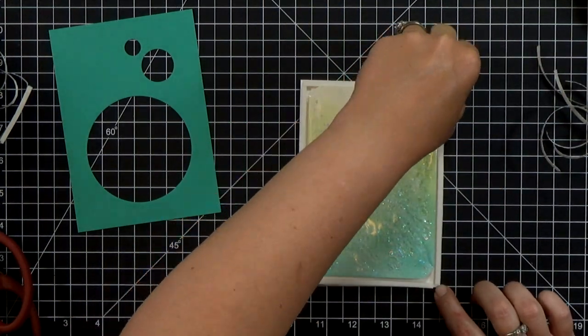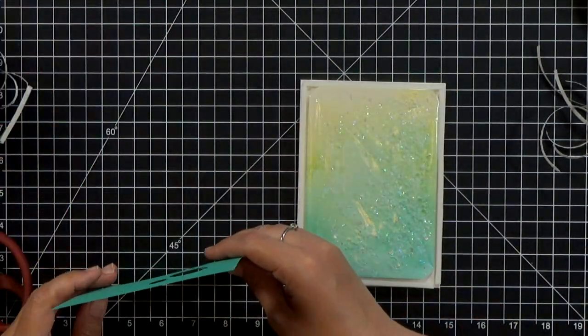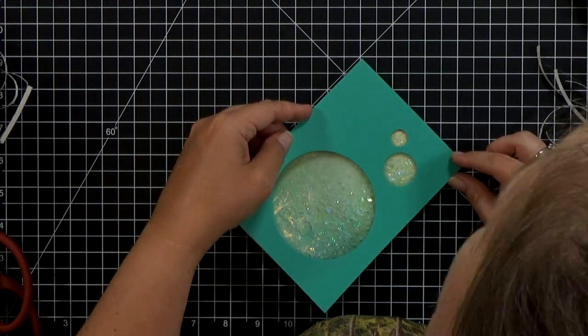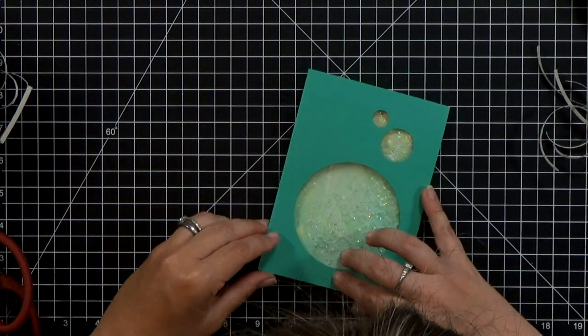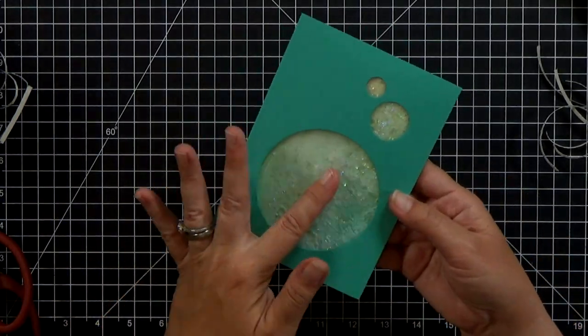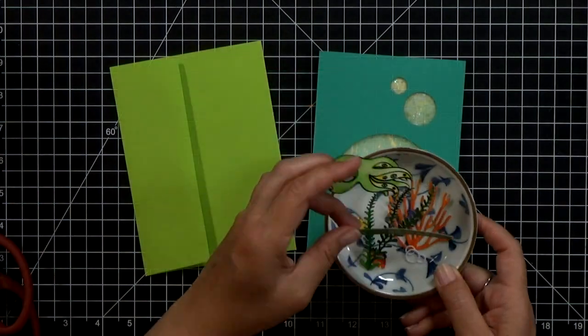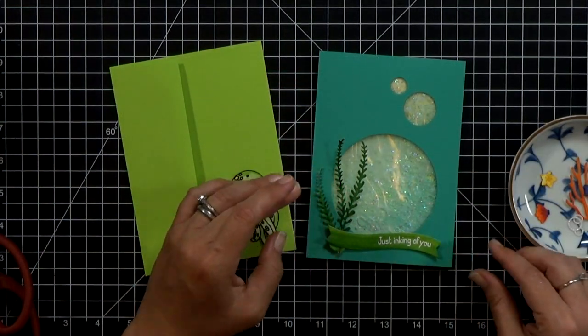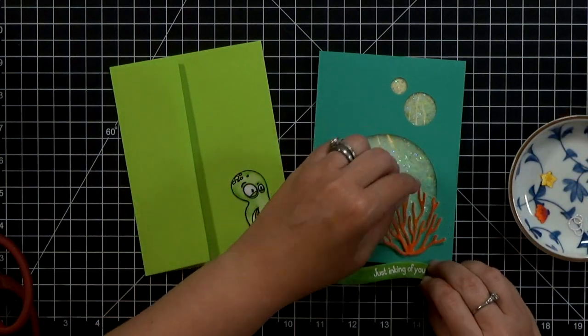So once I get these all cut and placed in there, I can go ahead and pull off the release paper and put my little shaker piece in. And then I can put the window on top of it. And now we have a shaker card. It's in there solid. You don't need to glue it down or anything else. All we need to do now is decorate it.